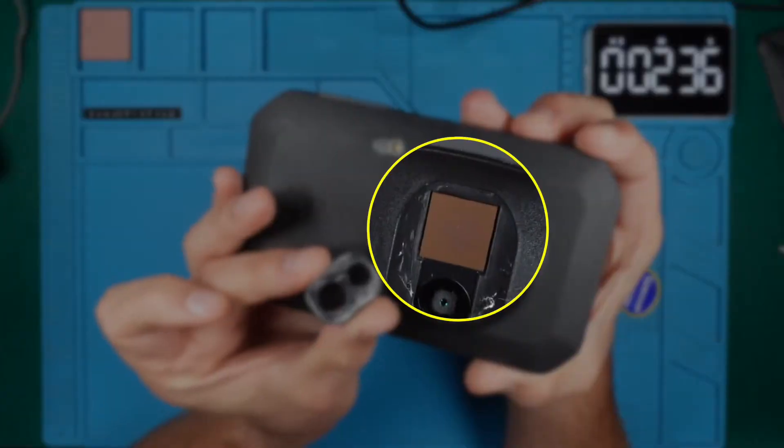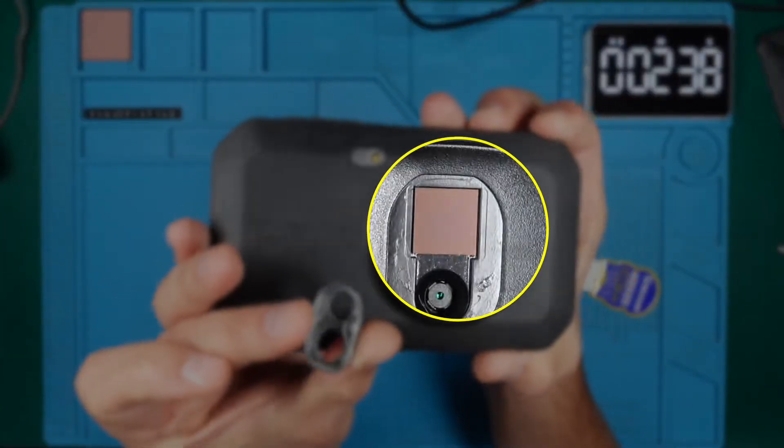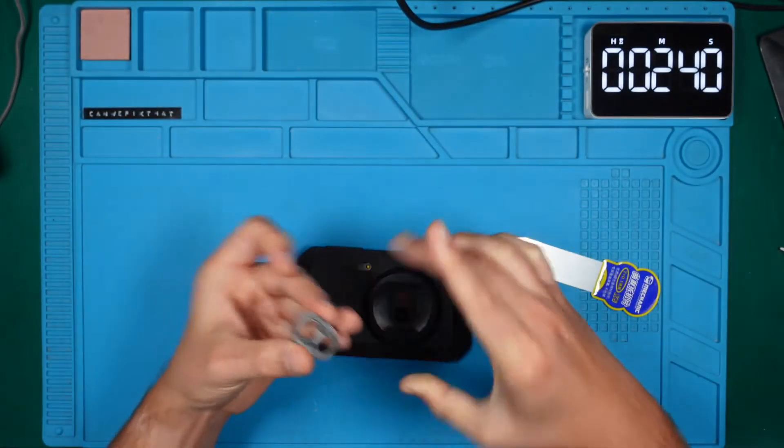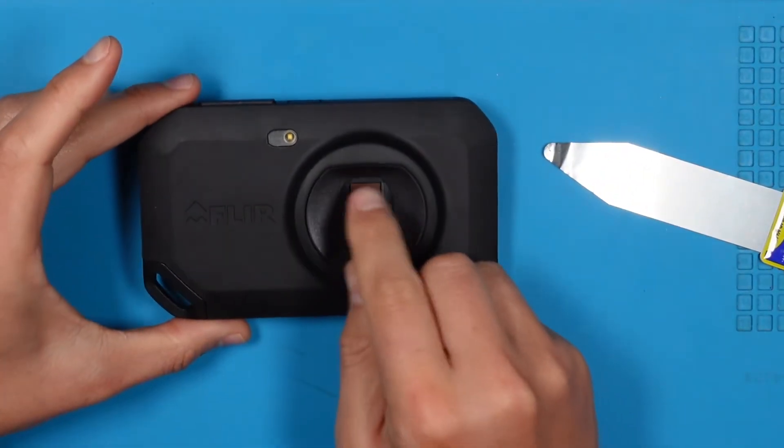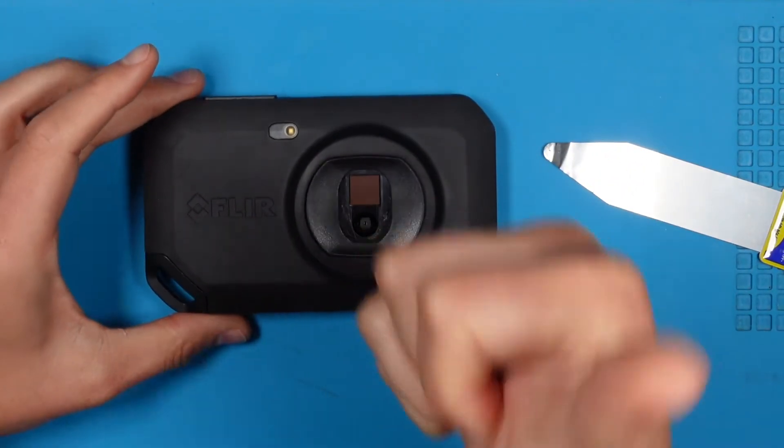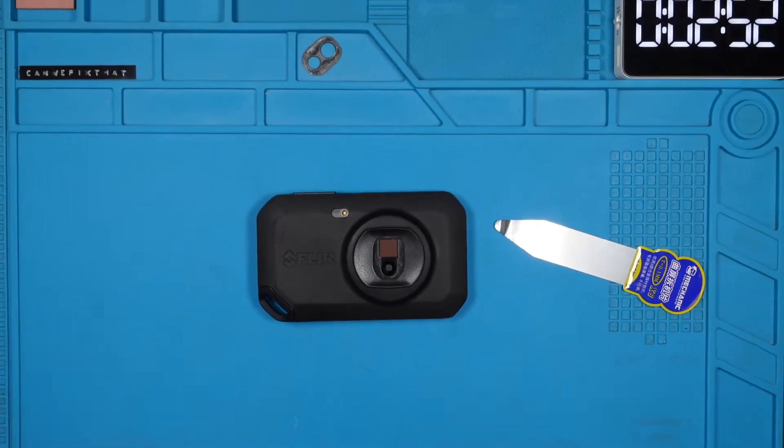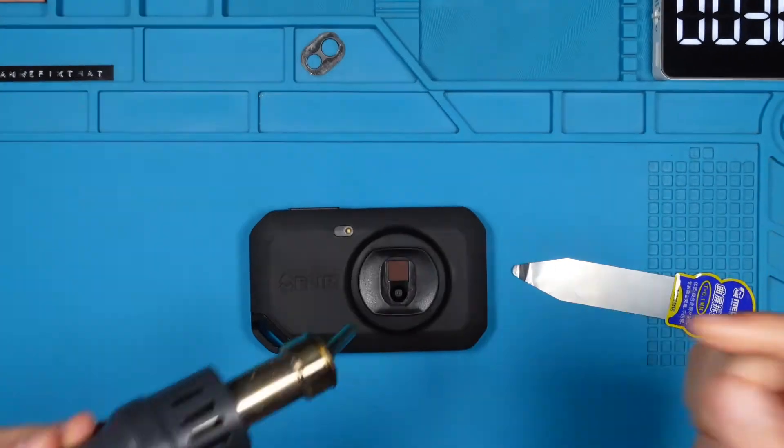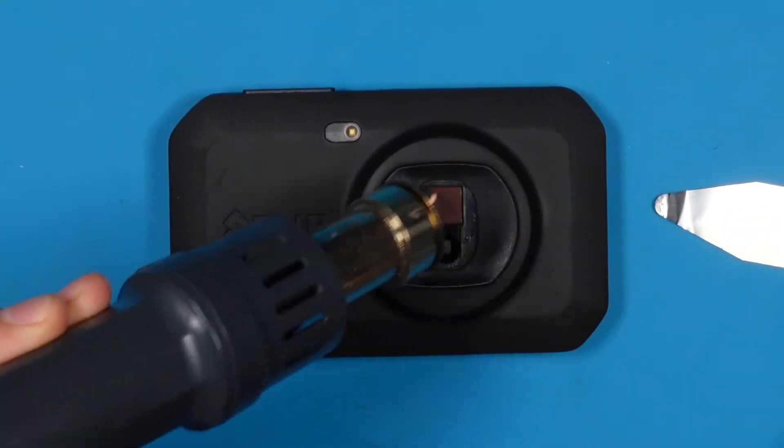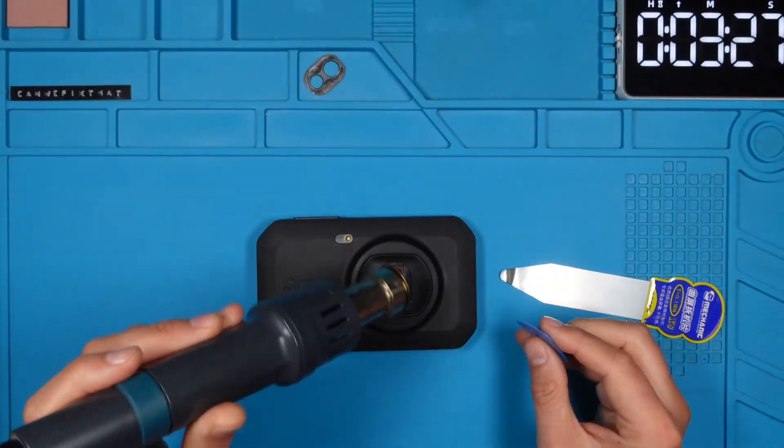That square, reddish piece of glass acts as a filter, eliminating any unwanted wavelength of light. To access the thermal camera module, we also need to take out that filter. For this step, we will follow a similar approach to the metal cover, apply some heat and then gently pry it off.